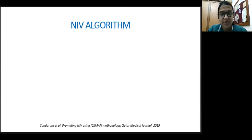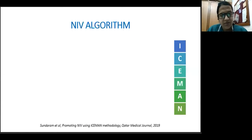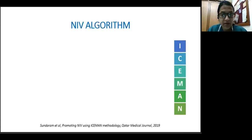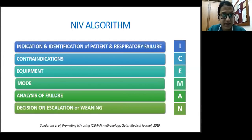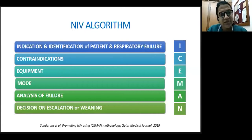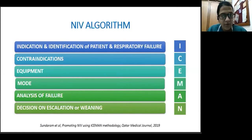This brings us to the main part of our discussion: the NIV algorithm based on the ICEMAN concept, published in 2019 from Qatar. It was developed mainly to train clinicians in judicial selection of patients for NIV. It helps remember the equipment needed for NIV initiation and serves as a reminder of contraindications. I stands for Indication and identification of patient and respiratory failure. C is Contraindication. E is Equipment. M is Mode of ventilation. A is Analysis of failure and troubleshooting. N stands for decision on escalation or weaning.